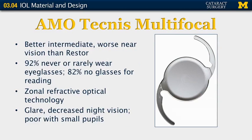The AMO Tecnis Multifocal is a direct competitor for that lens. This lens is similar in that you can see rings of power on the lens. It is somewhat better for intermediate distance, but not quite as good at near as the ReSTOR lens. In general, 92 percent of patients reported that they never or rarely needed to wear glasses for different activities. The technology here is somewhat different, relying on zonal refractive optical technology. Again, patients experience glare with this type of lens and decreased night vision, and this particular lens tends not to function as well with smaller pupils.